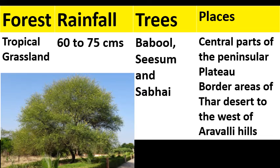The third type of forest found in India is tropical grassland. This region receives 60 to 75 centimeters of rainfall. Babul, sesum, and sabai grass are found here. The central parts of the peninsular plateau and border areas of the Thar desert to the west of the Aravallis have tropical grassland regions.